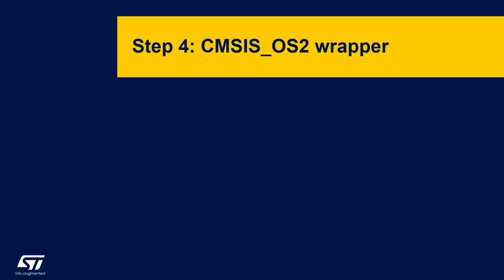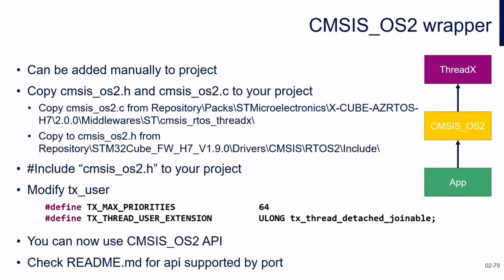We now move to step number four, which will be a description of elements of the operating system together with some specific features that we as ST have implemented in our X-Cube Azure 7 pack. So let's start from CMSIS-OS v2 wrapper. CMSIS-OS is a collection of APIs which enables defining the behavior of the middleware with different operating systems.